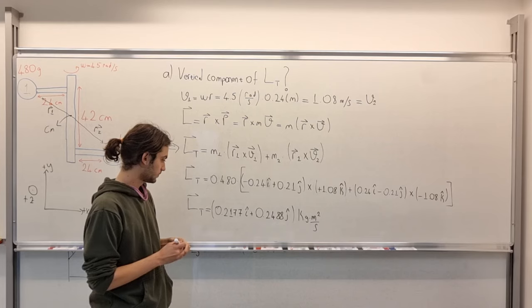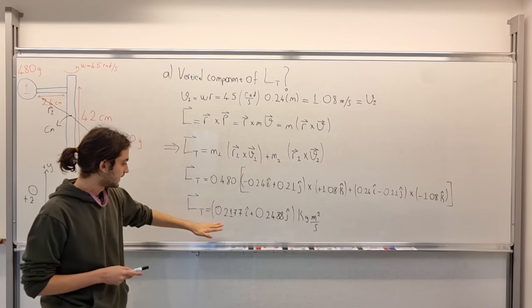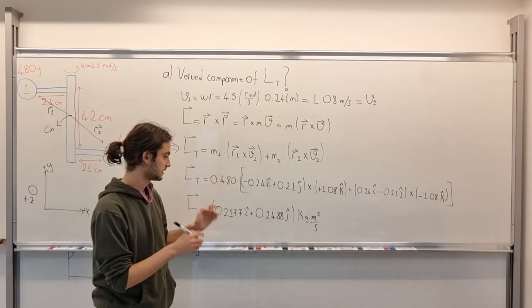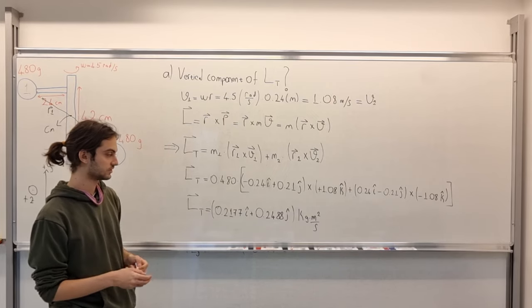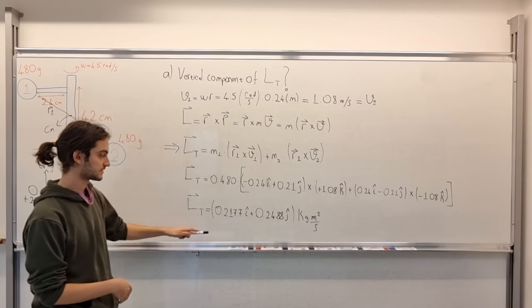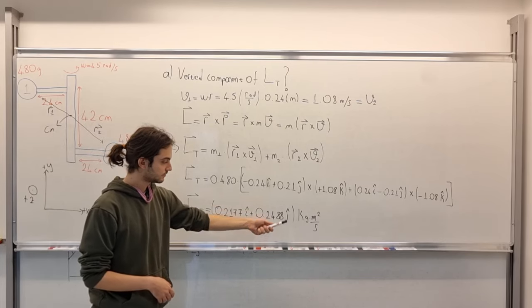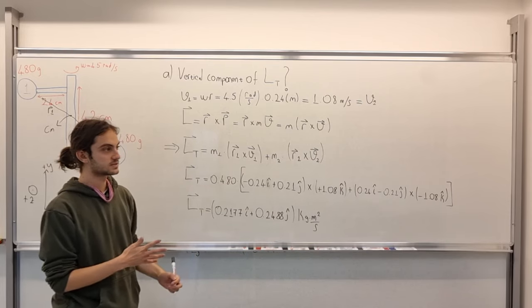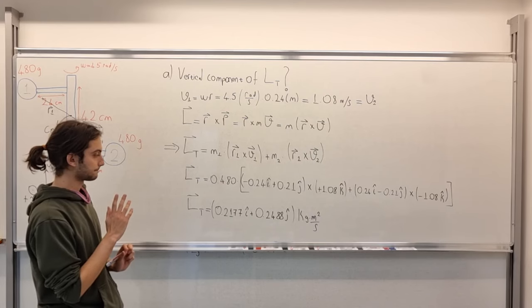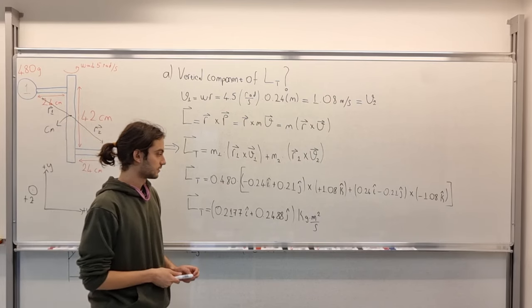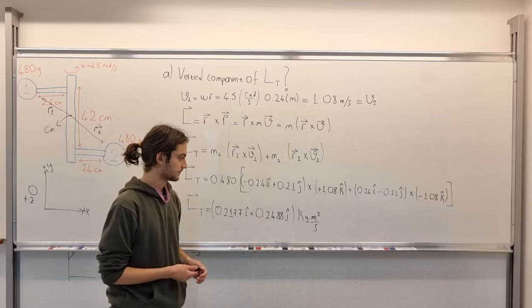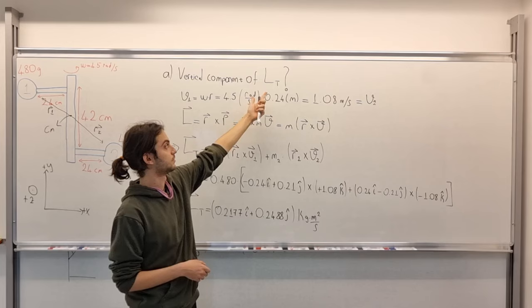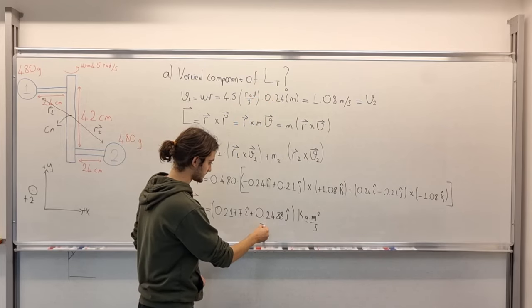So, what we see here is 0.2177 i-hat direction. So, its x component is to the posterior direction with this magnitude and 0.2488 j-hat. So, it means to be upwards with a magnitude of 0.2488. So, what we needed to find is the vertical component of LT, which is this thing.